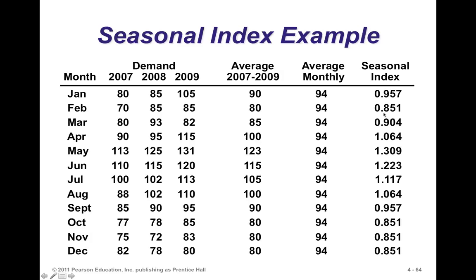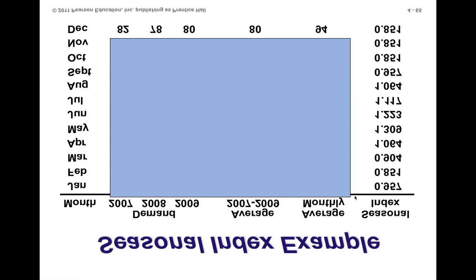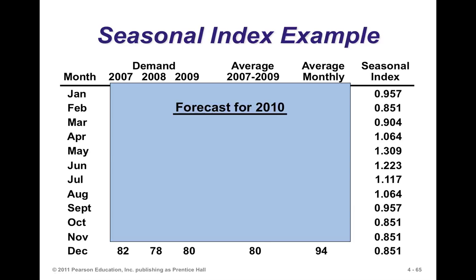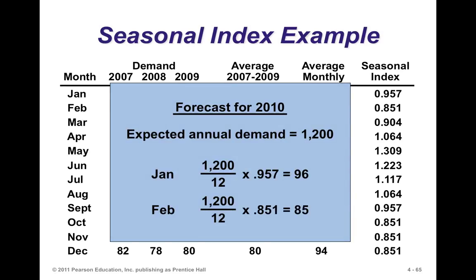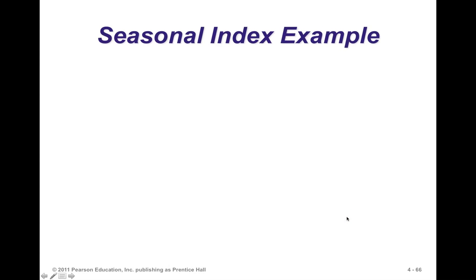We take the next average and multiply it by 0.851 for February, 0.904 for March, 1.064 for April, and so forth. For example, if the forecast for 2010 was 1,200 units, we divide 1,200 by 12, which is 100, and then multiply 100 by 0.957 for January and 0.851 for February — giving us 96 and 85 and so forth. That's one way to do it.